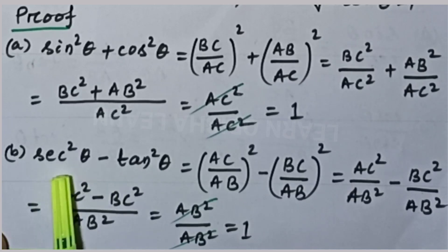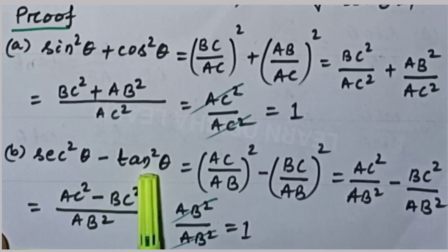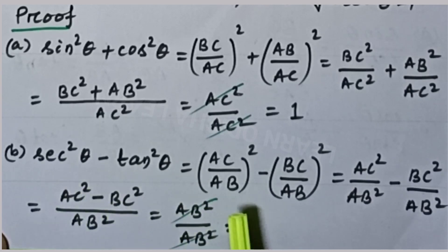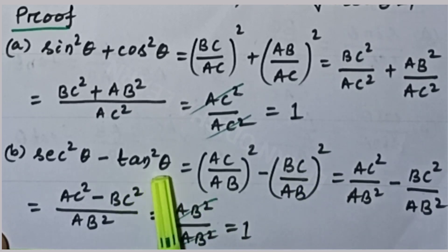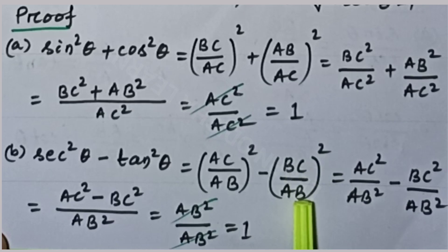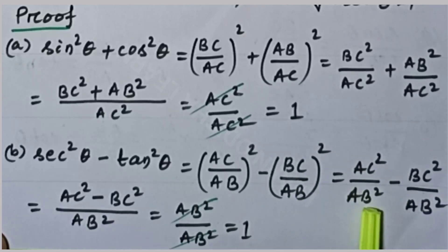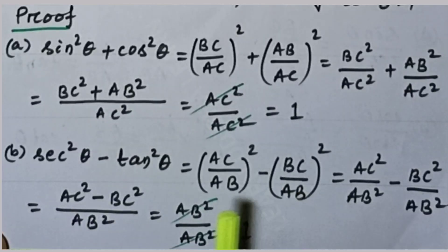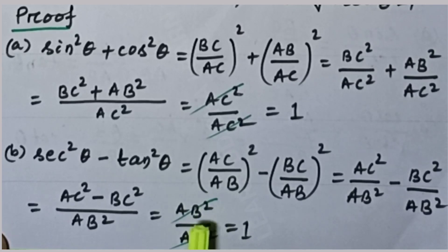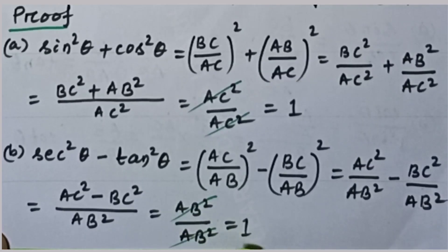Proof of the second square relation: sec²θ − tan²θ. Sec θ = AC/AB, so sec²θ = (AC/AB)². Tan θ = BC/AB, so tan²θ = (BC/AB)². Subtracting: (AC² − BC²)/AB². By Pythagoras theorem, AC² − BC² = AB², so AB²/AB² = 1. Hence sec²θ − tan²θ = 1.